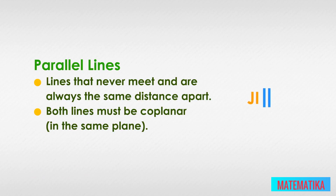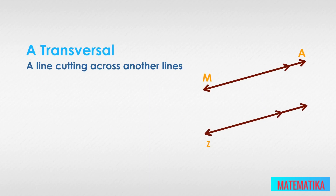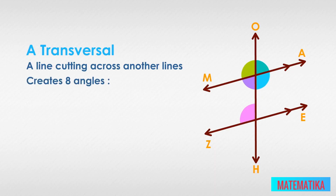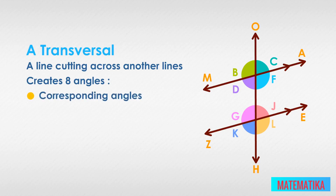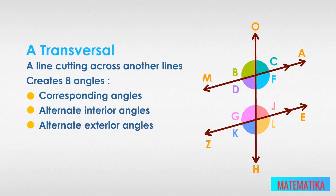JI is parallel to NX. What is a transversal? A line cutting across another line is a transversal. When cutting across parallel lines, the transversal creates eight angles. Those eight angles can be sorted out into pairs. These eight angles are corresponding angles, alternate interior angles, alternate exterior angles, and supplementary angles.